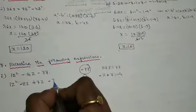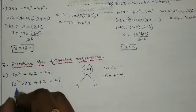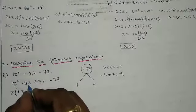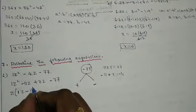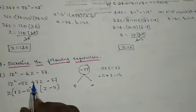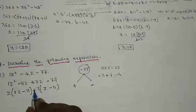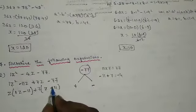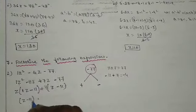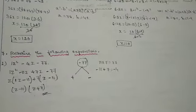And the last term as it is. So the 3-term expression is made into 4 terms. Now take the common. Z is common between the first and second terms: z into z minus 11. Then for the third and fourth terms, plus sign, z is already taken within a bracket, left out is 7: plus 7 into z minus 11. Now z minus 11 is common between these two. The factors are z minus 11 into z plus 7.